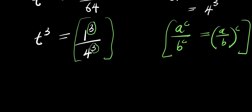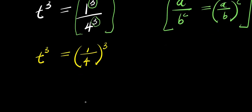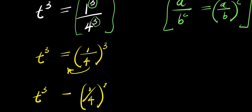So that means what we are going to have will be t to the power of 3 equals 1 divided by 4, raised to the power of 3. So what I can do will be to move this over here — it becomes negative 1 over 4 raised to the power of 3. So I have t to the power of 3 minus 1 over 4 raised to the power of 3.